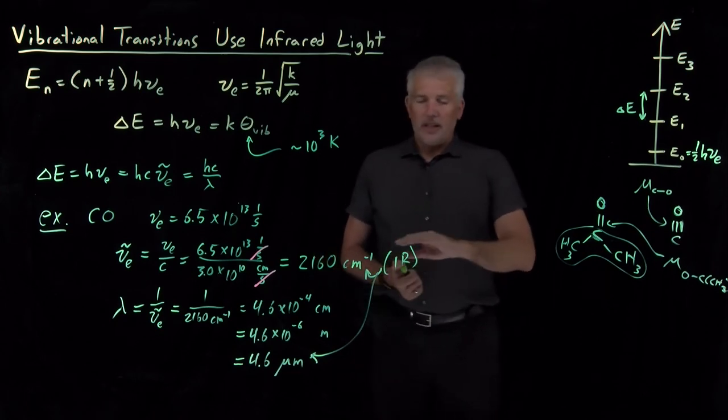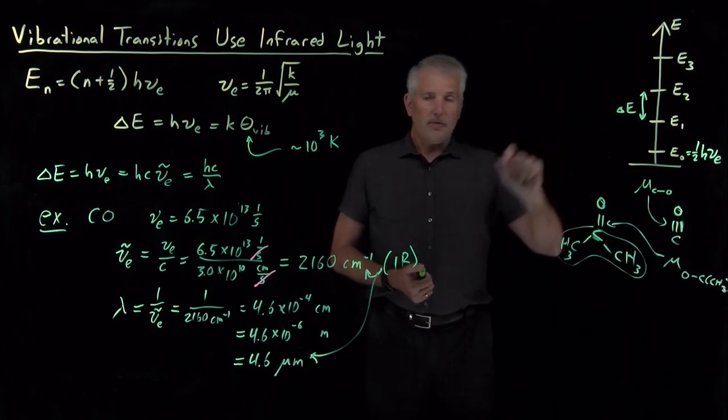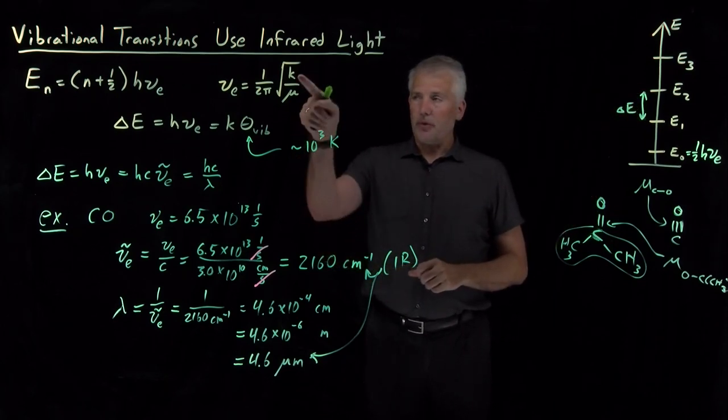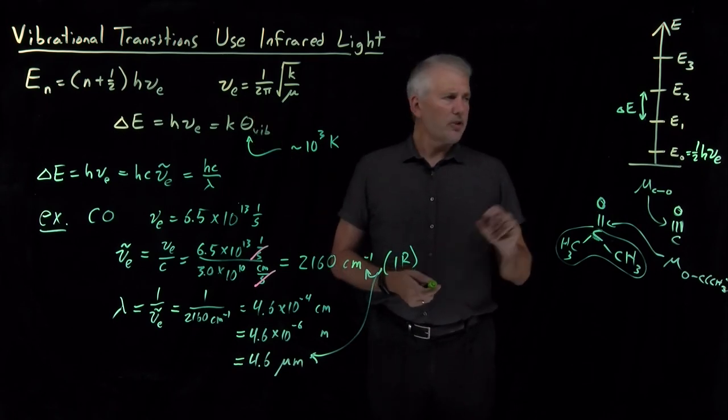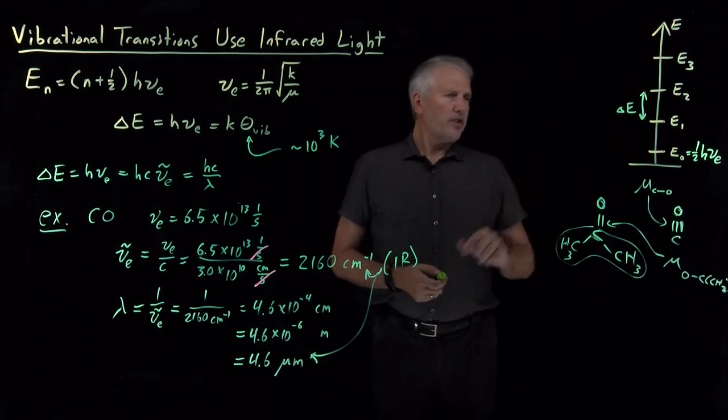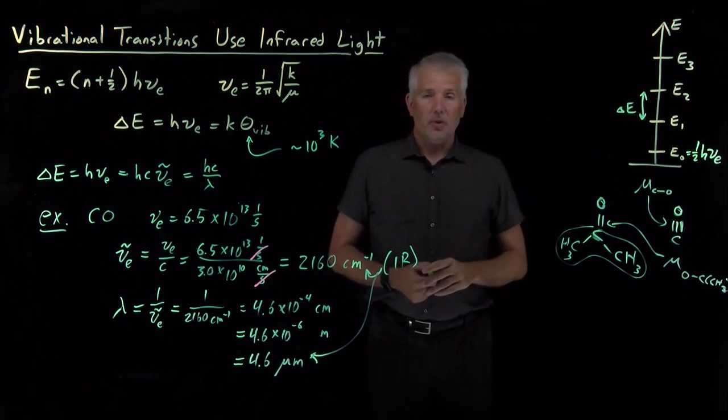So, we know how to predict now what types of light, what colors of infrared light to use to excite these vibrational transitions, if we know the fundamental vibrational frequency for molecules that behave like harmonic oscillators. The next question is to ask which of these transitions are actually allowable, and so we'll talk about the selection rules for harmonic oscillators next.